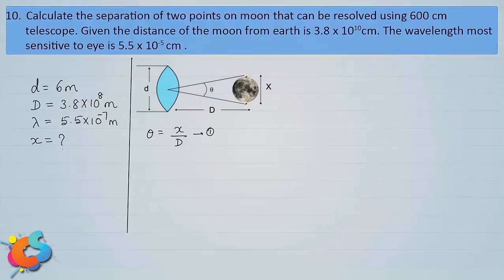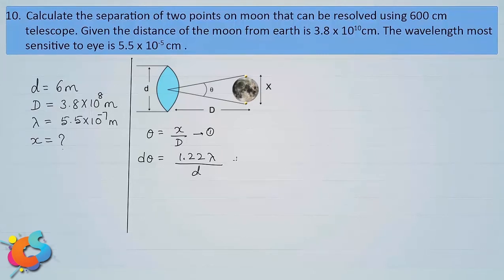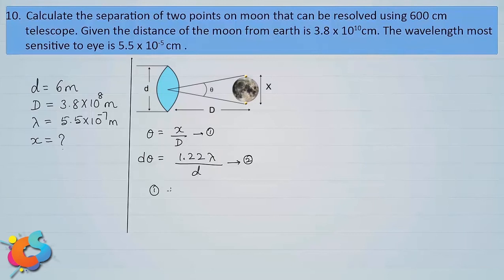To resolve those two point objects, there must be a minimum angle subtended at the objective, called the limit of resolution of the telescope objective. By definition, dθ = 1.22λ / d, where d is the diameter of the objective (equation 2). For the two points on the moon to be seen separately, the angle θ must be at least equal to the limit of resolution dθ, so θ = dθ.